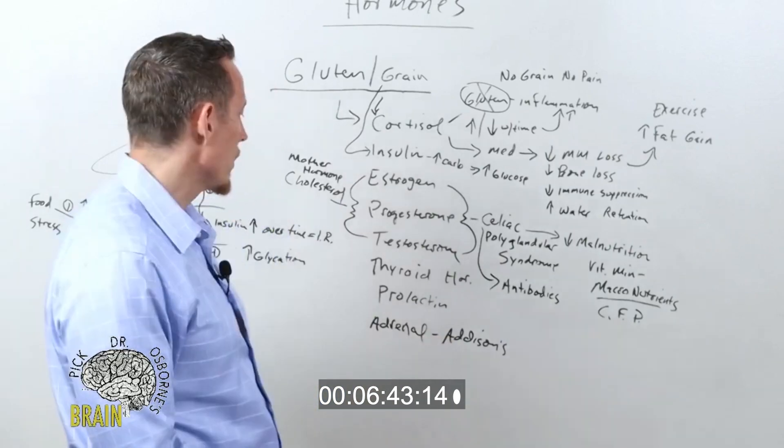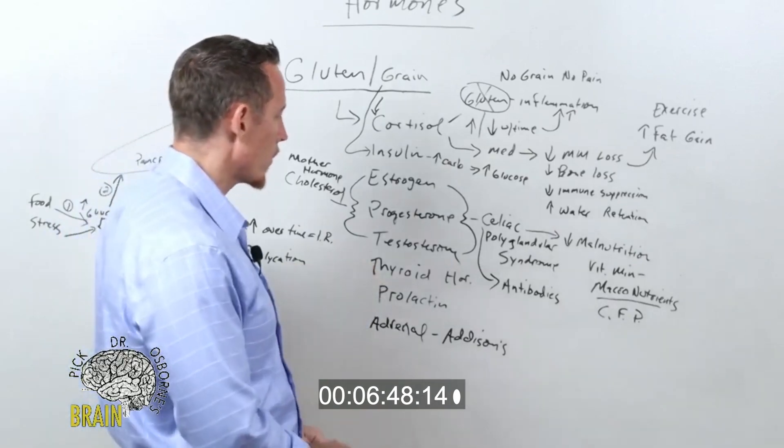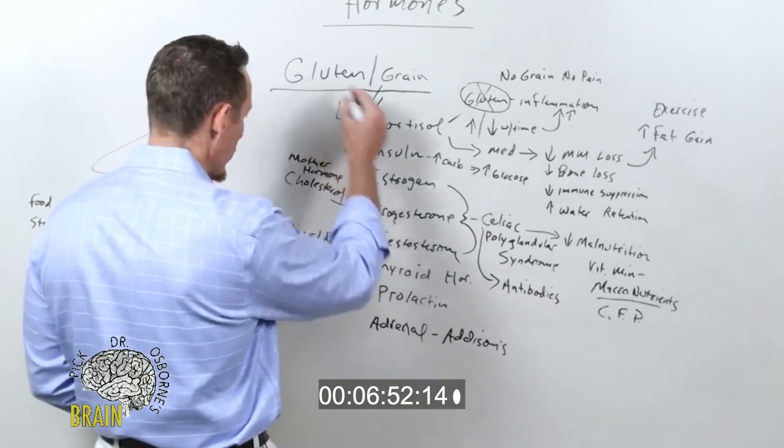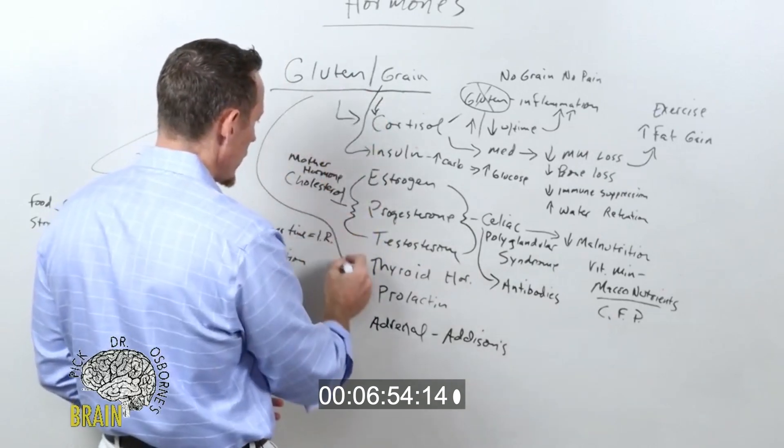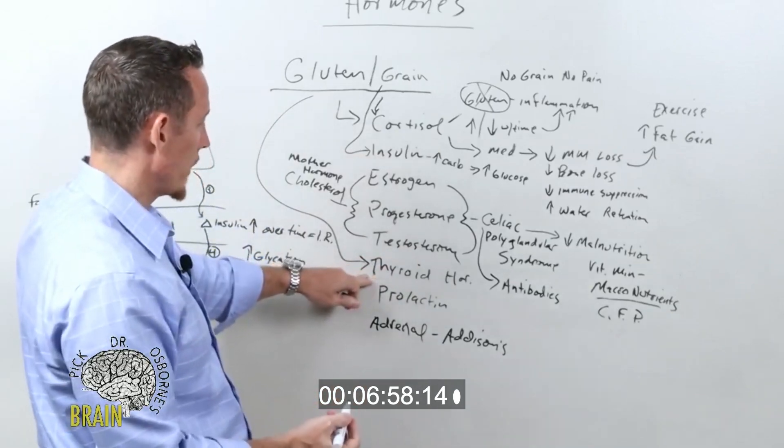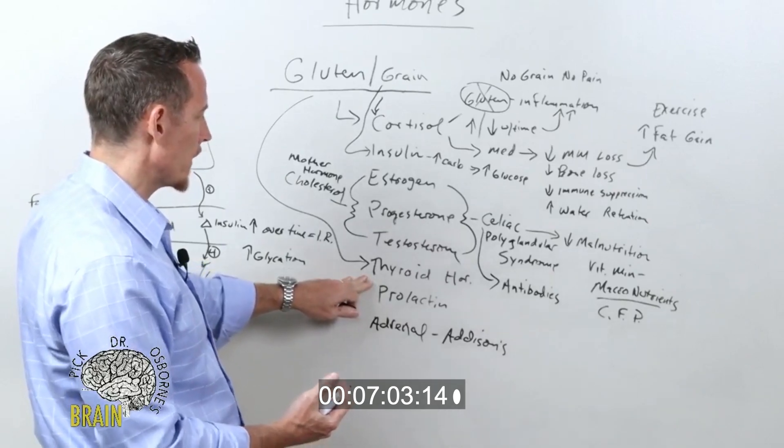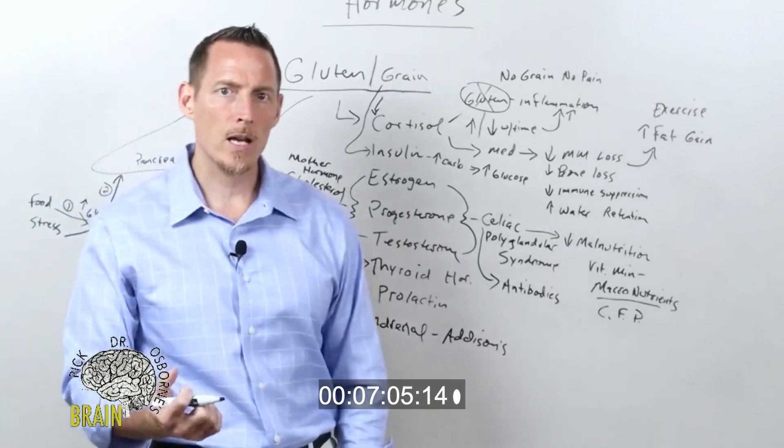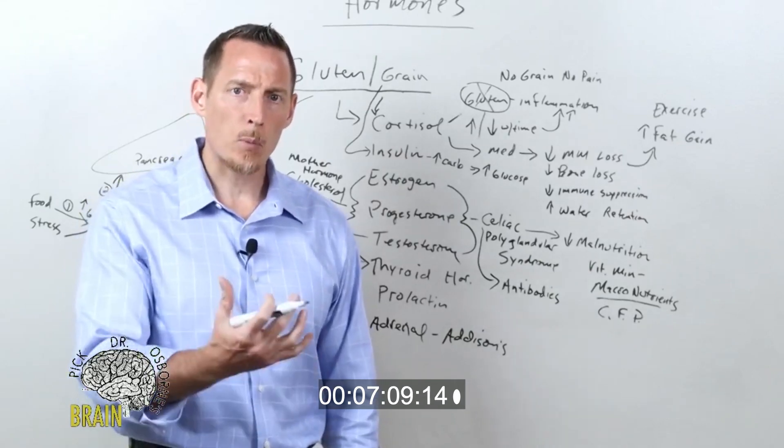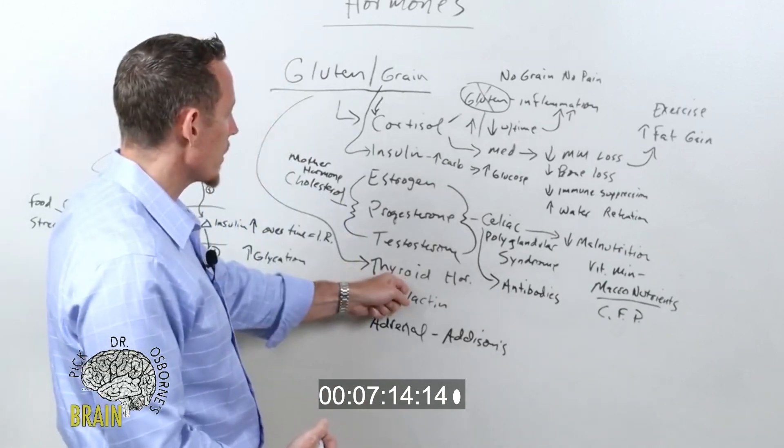And then we have thyroid hormone. Now I've done entire shows just on thyroid hormone, and one of the big issues with the thyroid is we know that gluten can directly create antibodies that impact or affect thyroid hormone. There have been well over 300 studies on this particular topic at this point. Even a lot of endocrinologists now are saying, hey, if you have Hashimoto's, which is autoimmune thyroid, we need to probably measure and look at gluten as a potential cause.